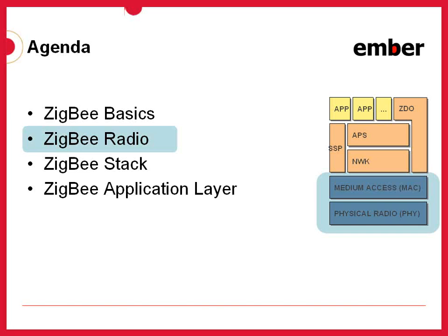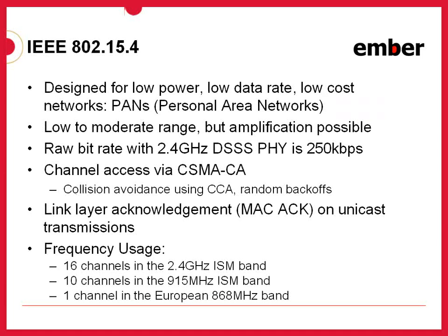Given a basic knowledge of ZigBee and its architecture, let's start to talk about the individual layers of the ZigBee stack. At the lowest level, you have the radio, which is your physical layer, and above that is the medium access control, or the MAC layer. The MAC layer in ZigBee is based on 802.15.4, the IEEE standard. 802.15.4 is designed for low power, low data rate networks with a low cost objective in mind.